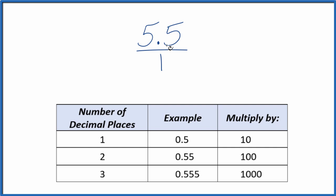Let's get this to be a whole number. If I have one decimal place here, what I can do is multiply by 10, and that'll give me a whole number. So 10 times 5.5 ends up giving me 55. That's a whole number.